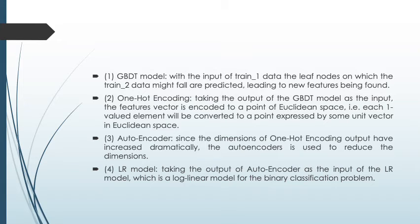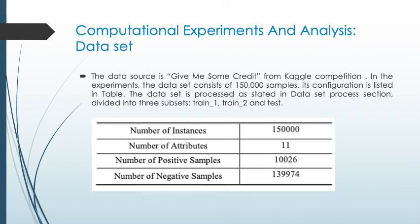Next is the autoencoder. Since the dimension of one-hot encoding output has increased dynamically, the autoencoder is used to reduce the dimension. In this paper, the designed autoencoder algorithm may reduce the dimension of the input vector to 1/8 of its original level. Next is the LR model. Taking the output of the autoencoder as the input of the LR model, which is a log-linear model for binary classification with a sigmoid function, the LR model maps the result of the linear regression to a value between 0 and 1. Usually the output of the LR model is close to 0 or 1, indicating a higher confidence level of the prediction result.